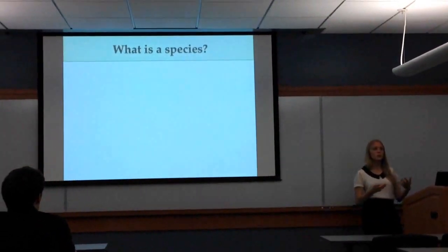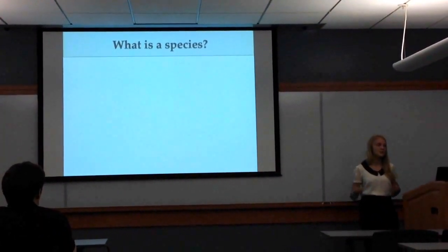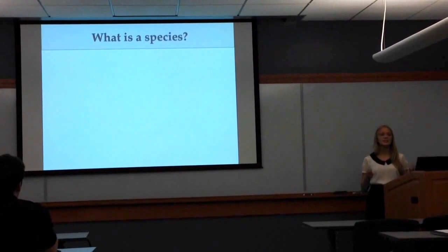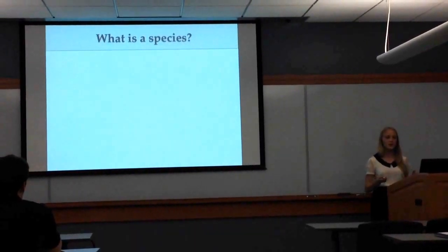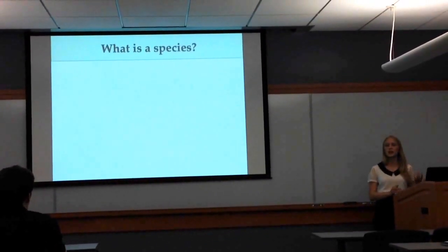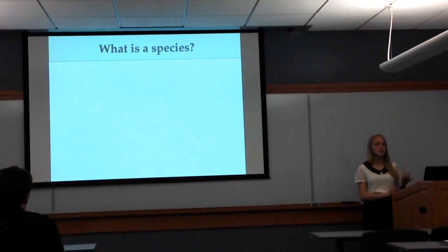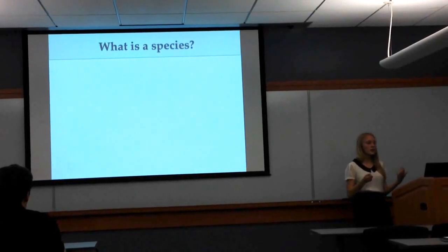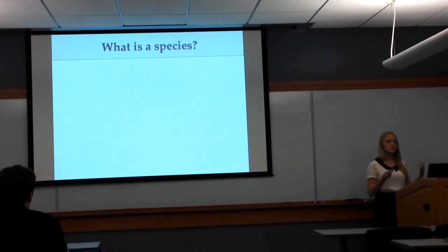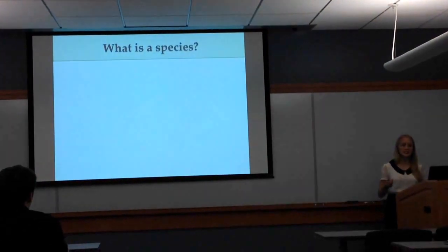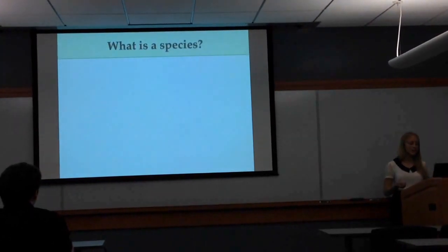A very important by-product is: what is a species? Charles Darwin, in his famous and influential book On the Origin of Species, didn't really actually talk about how speciation occurs. And of course, if we want to understand this, we first have to understand what a species is and how we're going to define it.